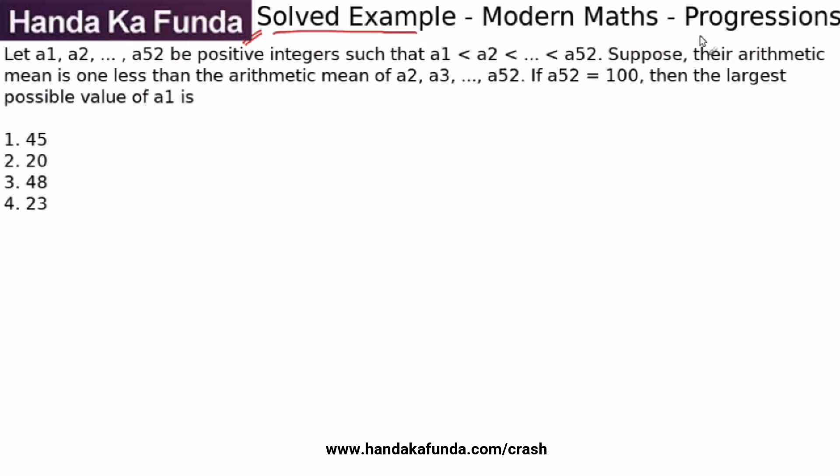Welcome to another solid example on progressions. We are given a1, a2 till a52 are positive integers such that they are increasing. Suppose their arithmetic mean is 1 less than the arithmetic mean of a2, a3 till a52.